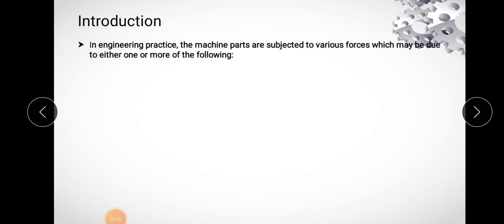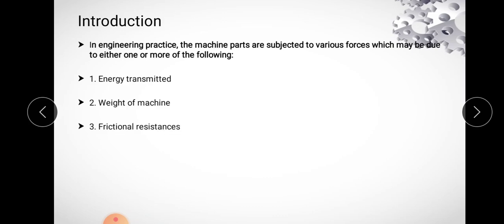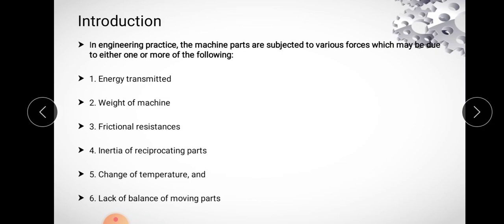Now let us understand the different loads acting on machine parts. Machine parts are subjected to various forces which may be due to one or more of the following reasons: energy transmitted, weight of the machine, frictional resistances, inertia of reciprocating parts, change of temperature, and lack of balance of moving parts. There are a number of reasons due to which machine parts are subjected to various forces, and accordingly we have to design the mechanical component.